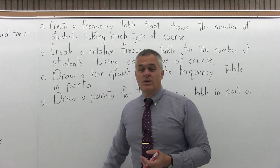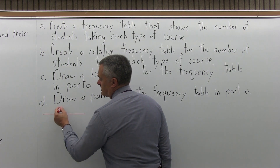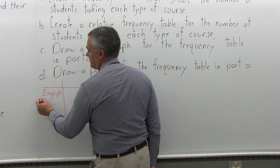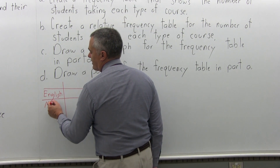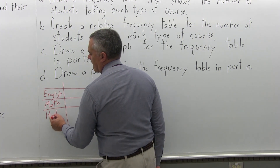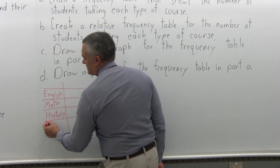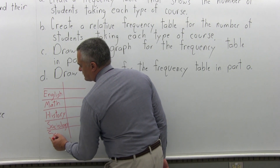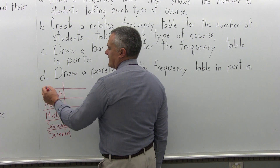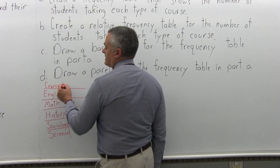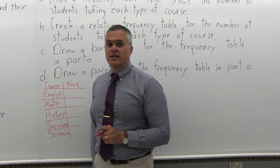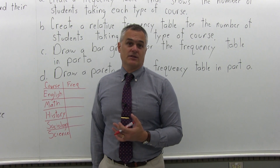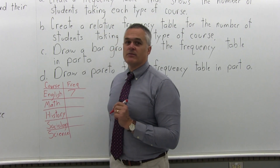For Part A, a frequency table — we want to make a table with two columns. One column will list the type of courses: English, Math, History, Sociology, and Science. The second column will be Frequency. If you go back to the original information and examine each student, you'll count seven students that have English as part of their schedule, so that gets a seven.